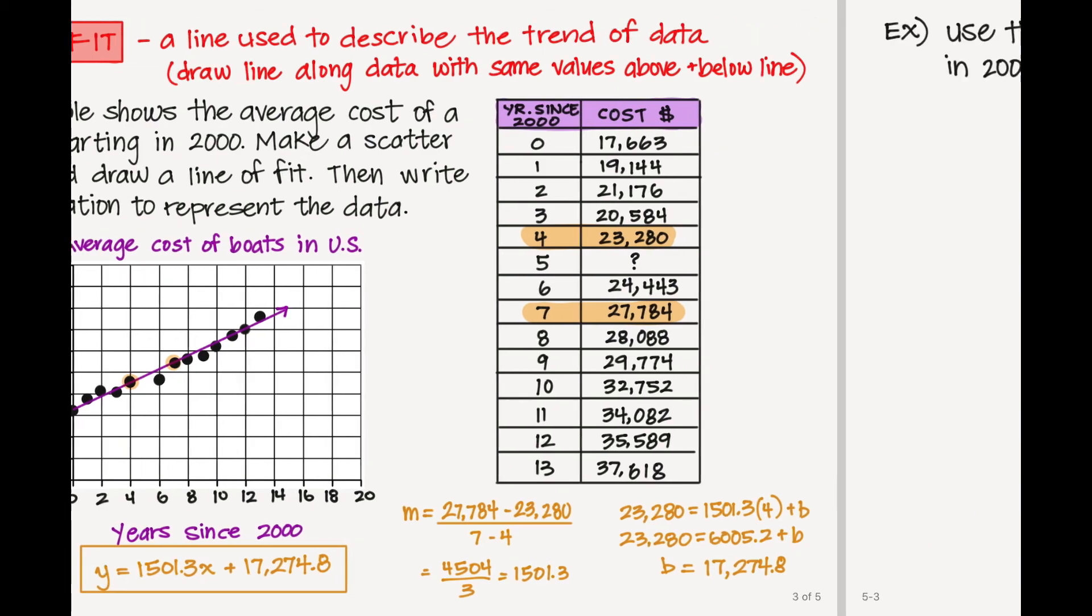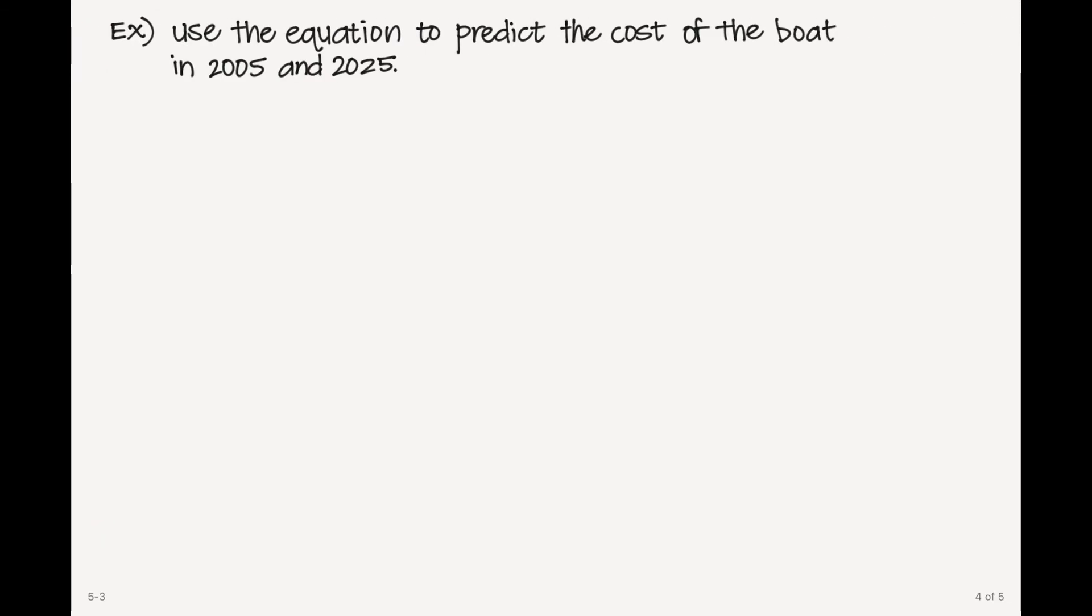Now I have something else for us to do based on this problem. We're going to use our equation to predict the cost of the boat in that year 2005, that's the year that was skipped, but then also way in the future at 2025. So that represents x at 5 and x at 25.